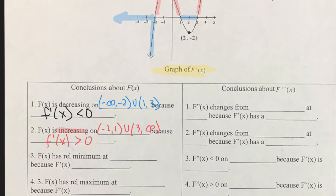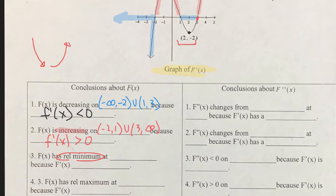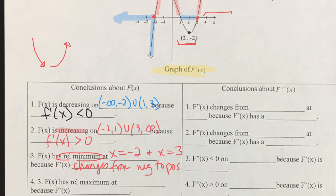Next: when does f have a relative minimum? f will have a relative minimum when the function changes from decreasing to increasing — that is, when f prime changes from negative to positive. It looks like that happens here, where the graph goes from negative to positive. We're also going to have one at negative 2 because the function also changes from decreasing to increasing there.